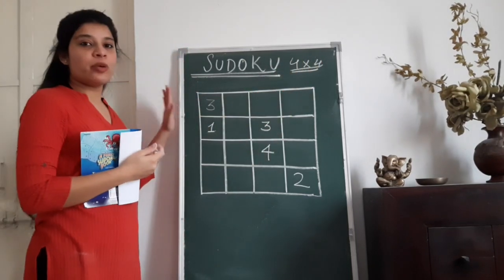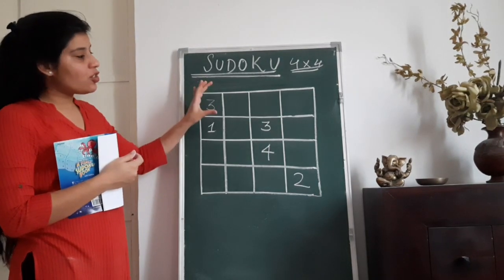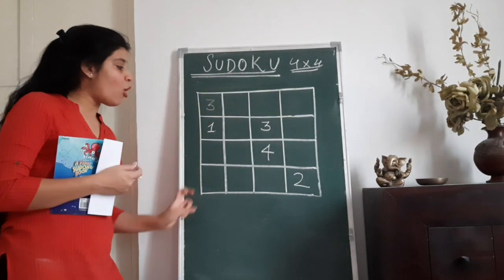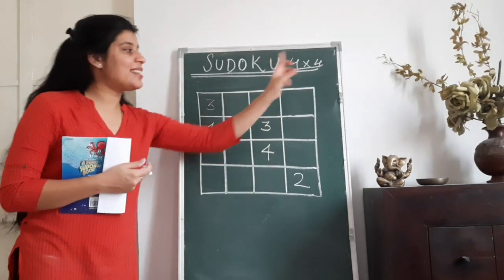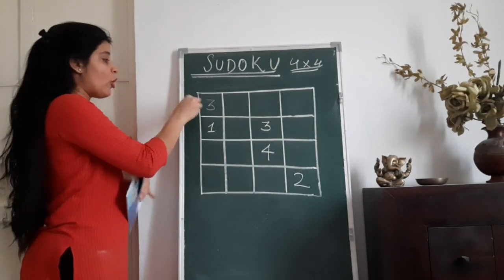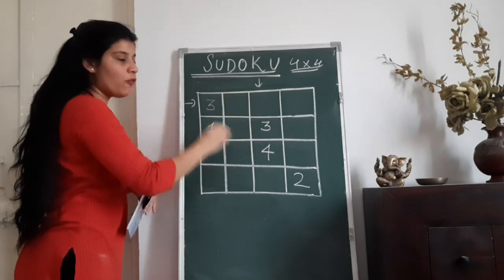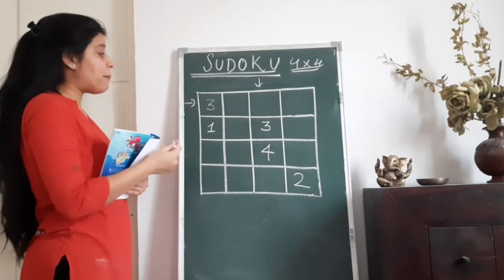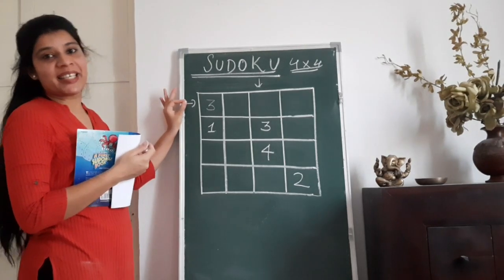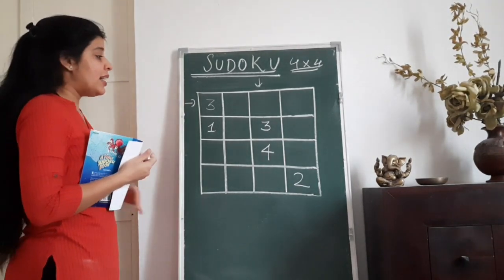The first and foremost basic concept of Sudoku is that the sum of each row and the sum of each column is the same. Like if you add the first row or if you add the third column, then the sum of both of these should be the same. Apart from that, no number should be repeated in any column or any row. Let's start.